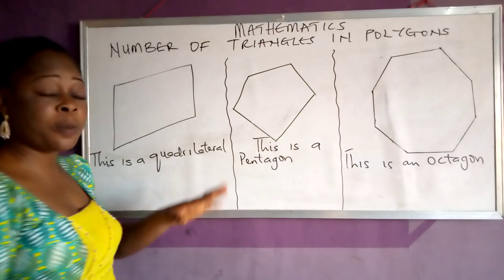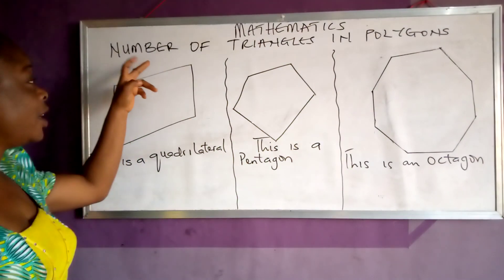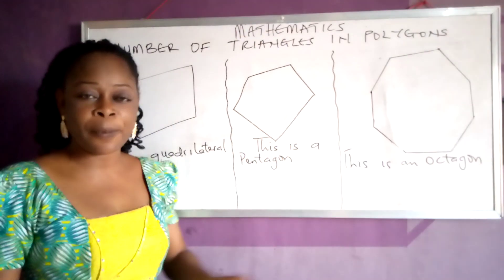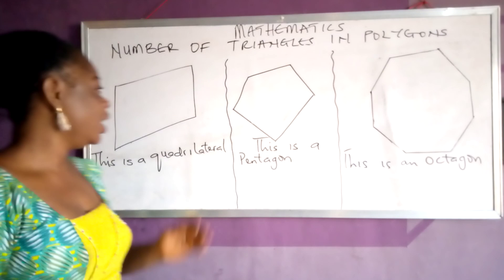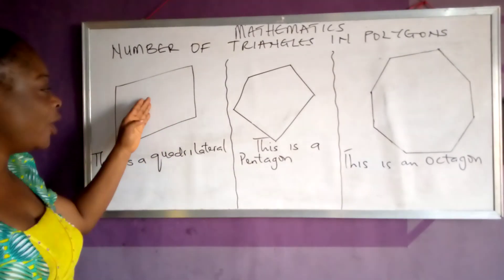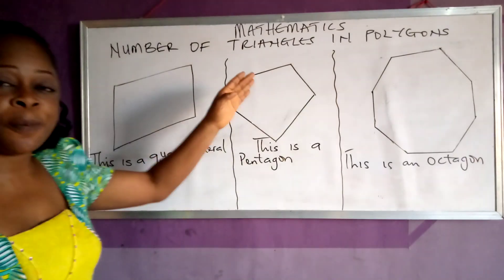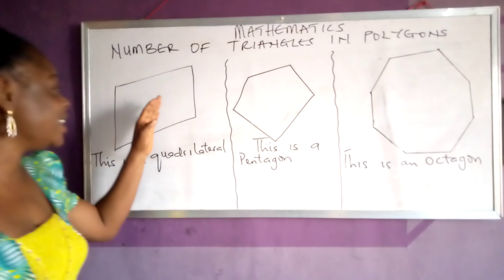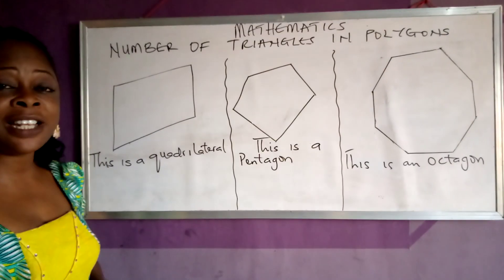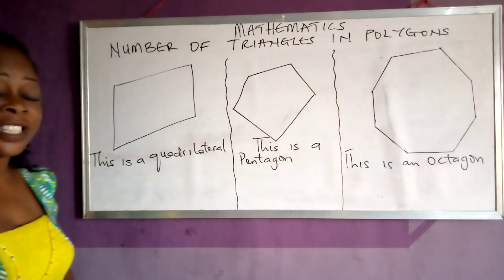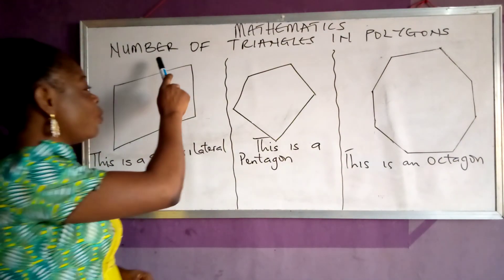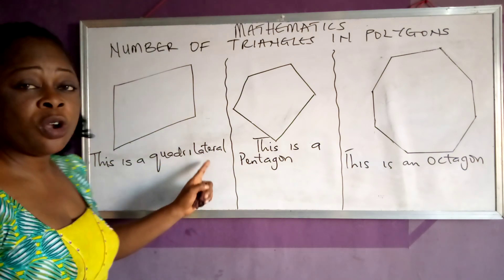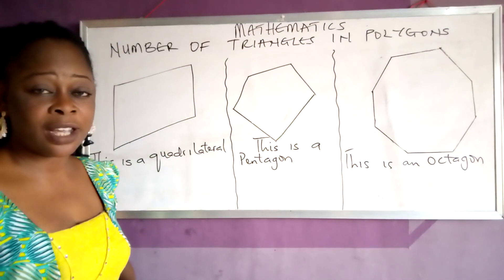The next sub-topic is the number of triangles in a polygon. This is a polygon, this is a polygon, and this is another polygon. If you look at this one, how many sides does this polygon have? Let's count: one, two, three, four. So this is a quadrilateral.